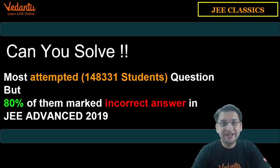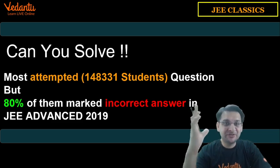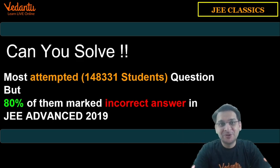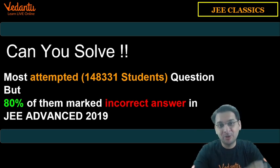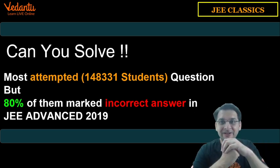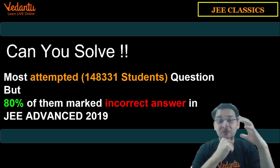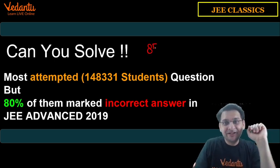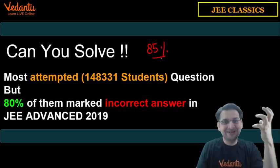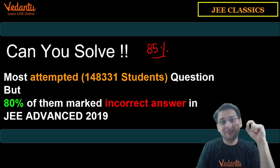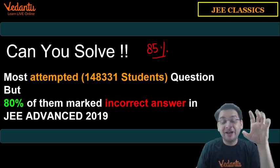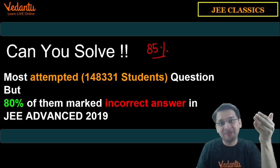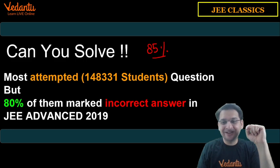Hi all, welcome to this series called JEE Classics, where we will solve classic JEE problems. This is one of the most classic problems because it is one of the most attempted questions in JEE Advanced 2019. It was attempted by 1,48,331 students — almost 85% — but only 20% of those who marked it gave the correct answer. So 80% of people's answers were wrong. Let us look at it and try to solve this.